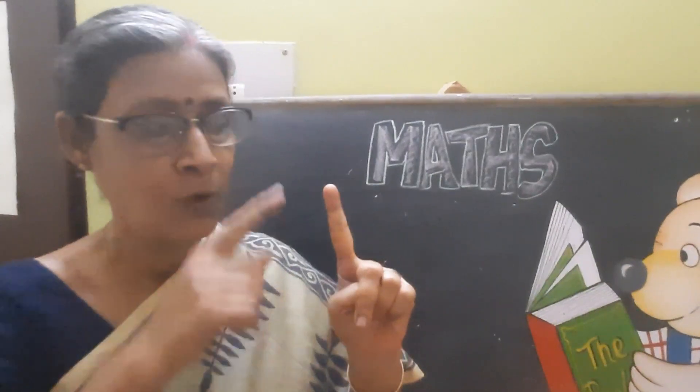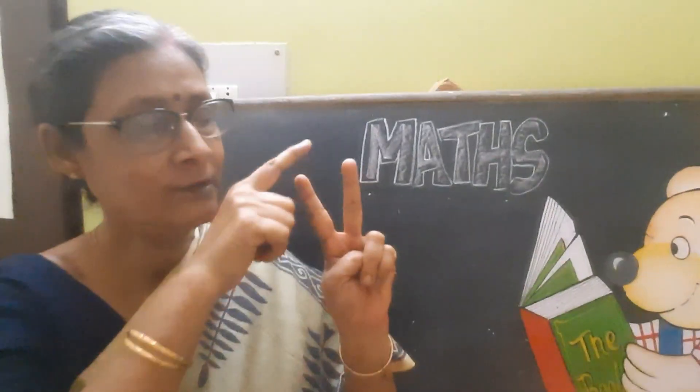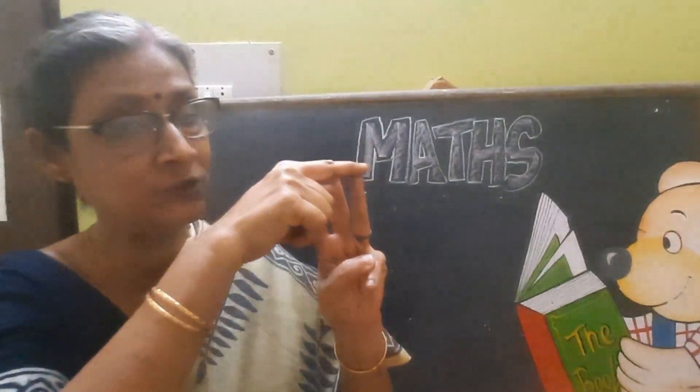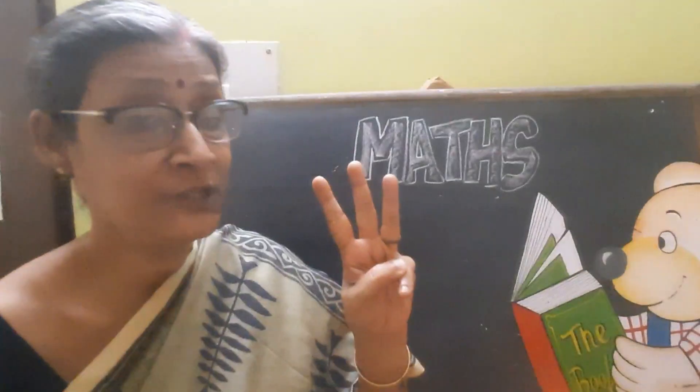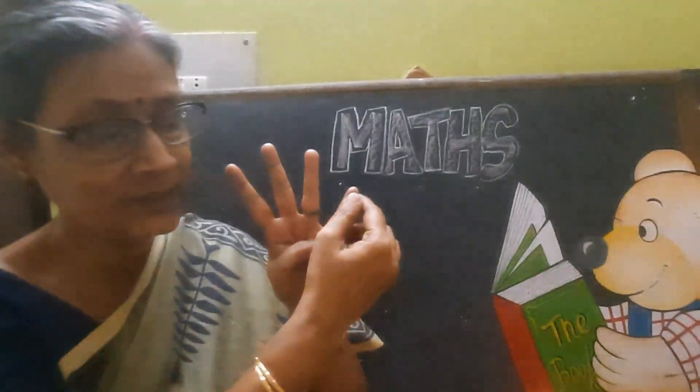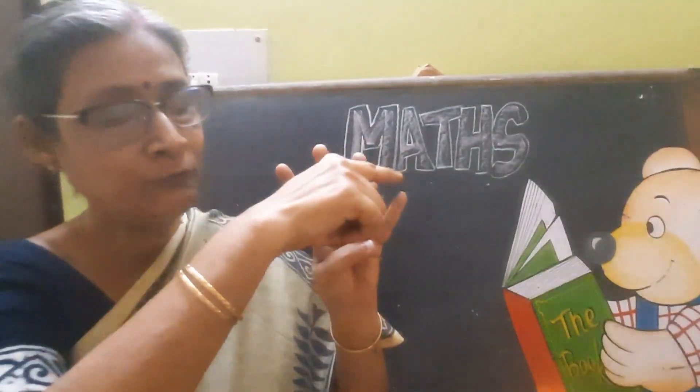1, 1 and 1 makes 2, then 1, 2. If I take one more finger, then 1, 2, 3. Now after 3, which number comes? If I take one more finger, then 1, 2, 3, 4.